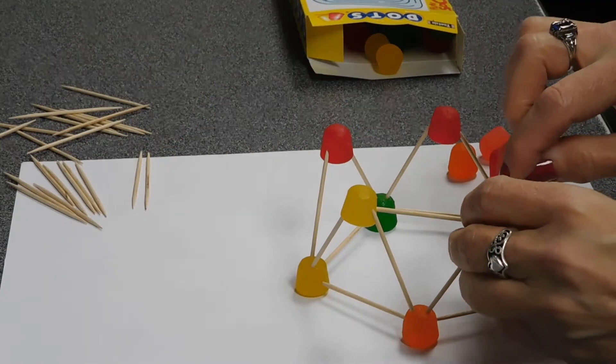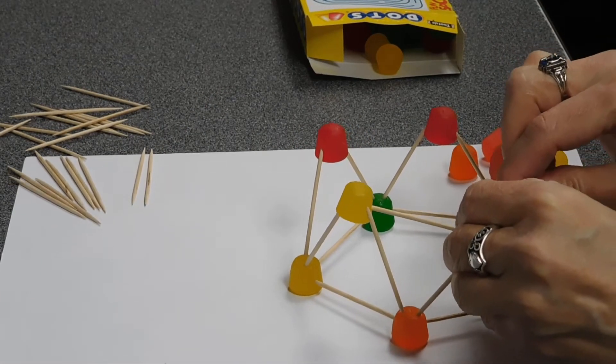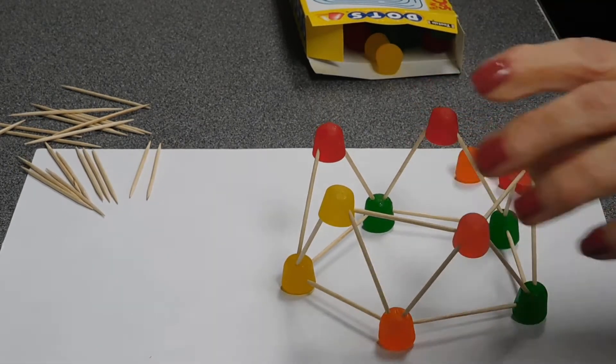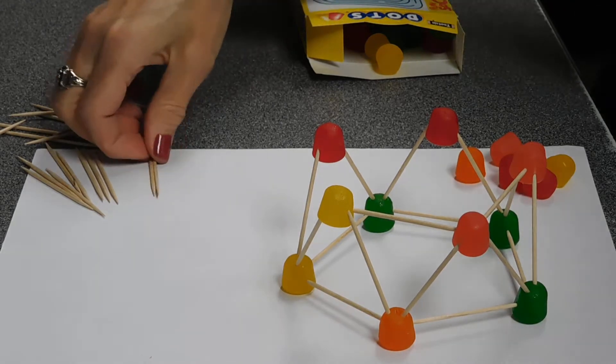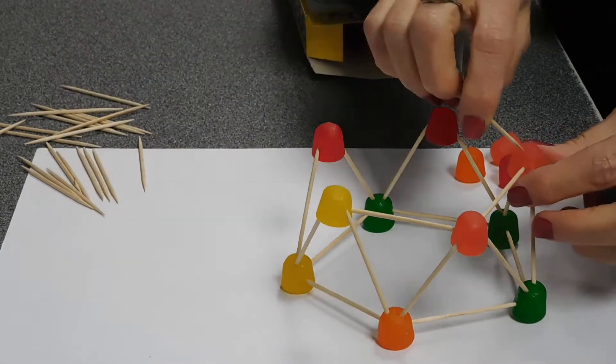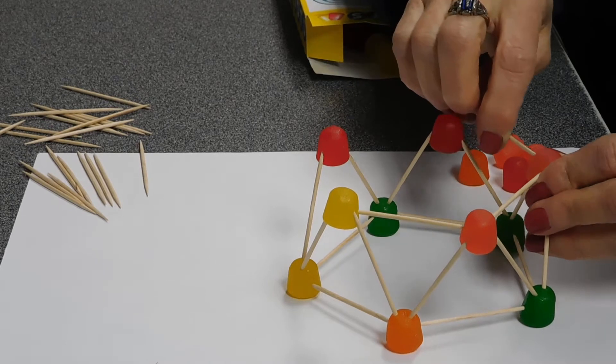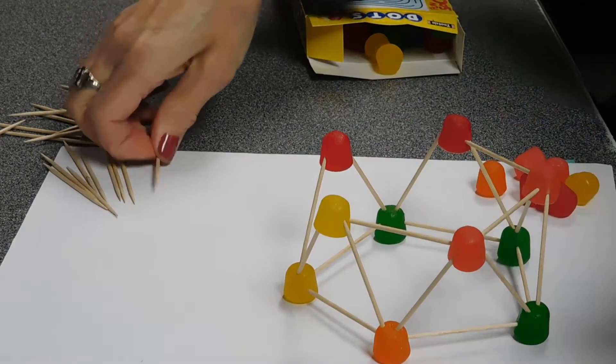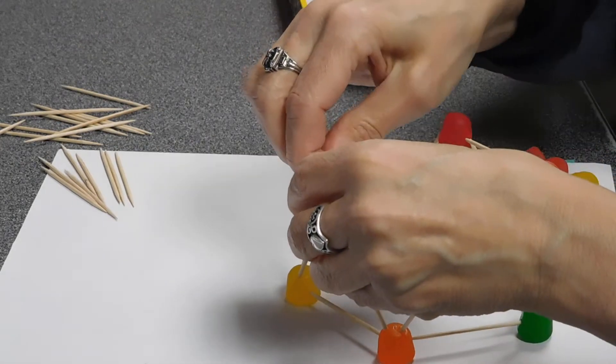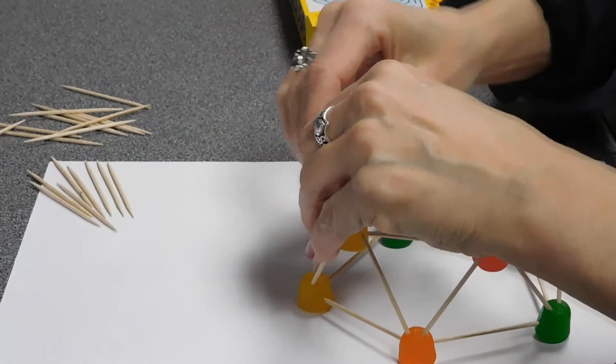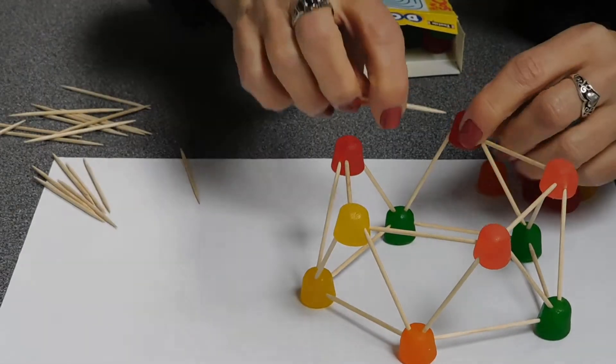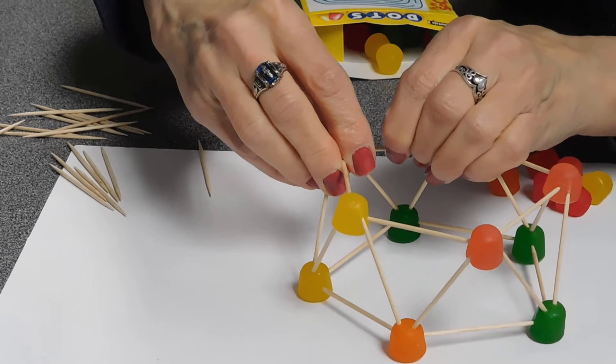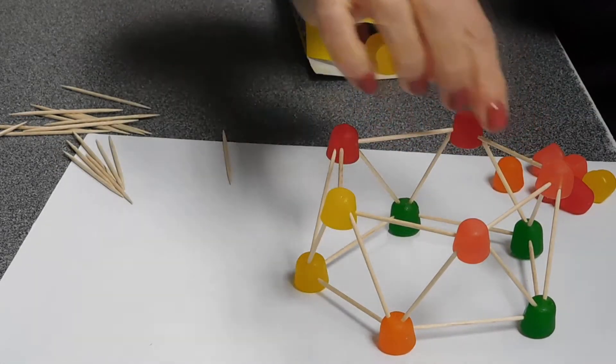And you can probably guess what we're going to do next. We are going to make another pentagon by putting toothpicks in each of the gumdrops. So we're connecting them around. So basically we have the base of another pentagon. So you'll see there is our five-sided pentagon.